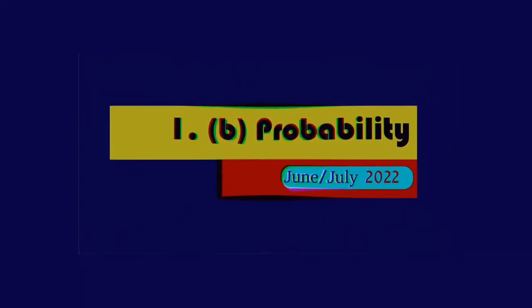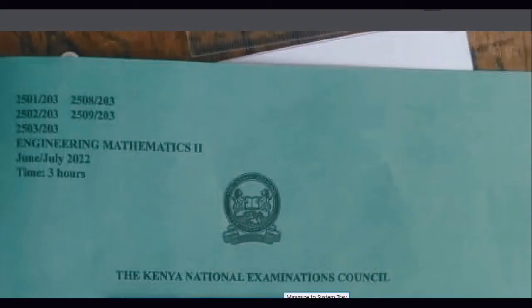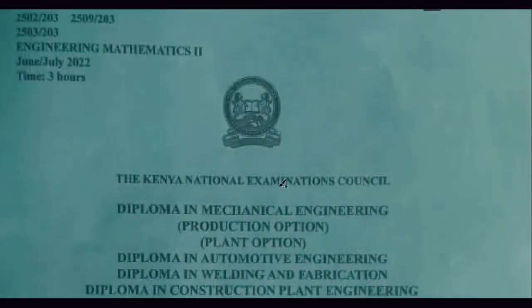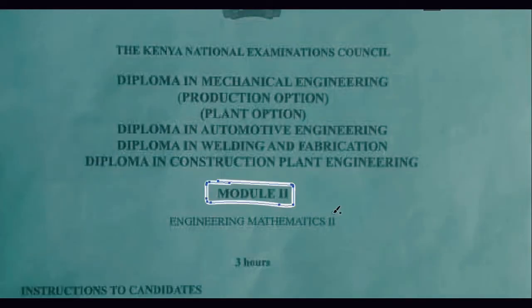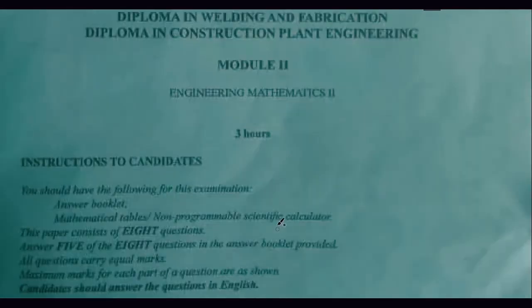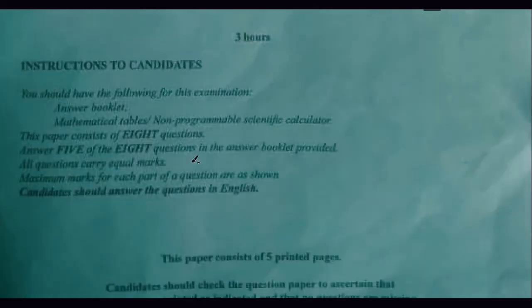Hey there. Today we are going to work out on probability. This is actually June, July 2022, Engineering Mathematics 2, and it's actually three hours. So the paper is suitable for mechanical, automotive, welding and plant engineering. So the first question is about probability.